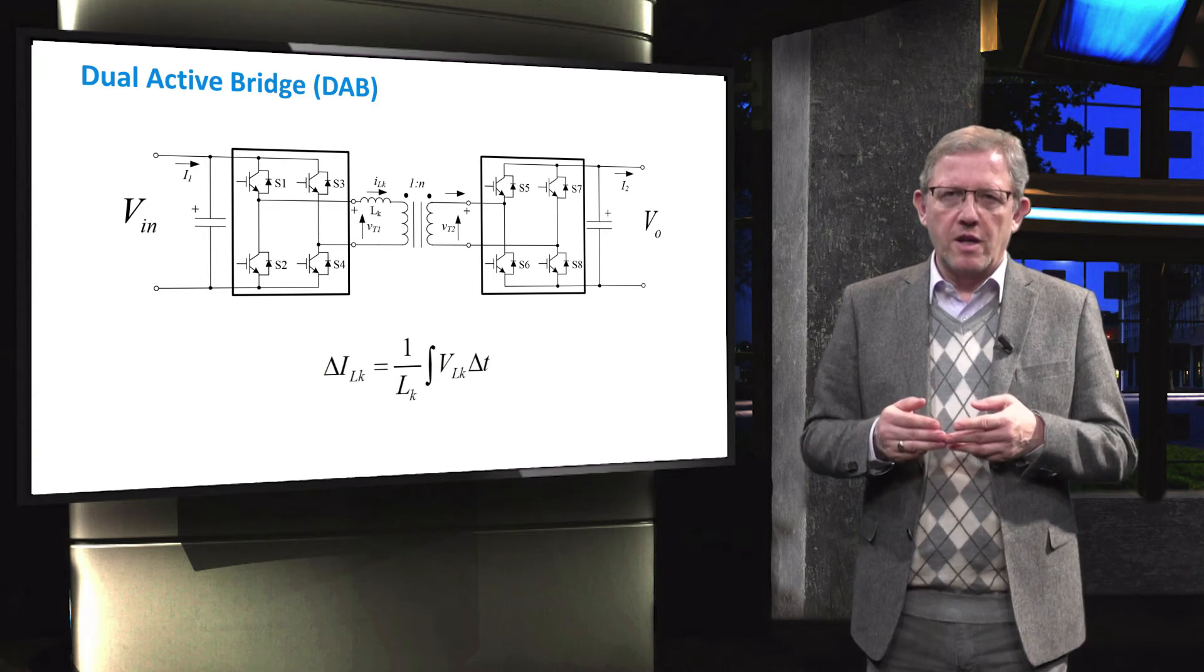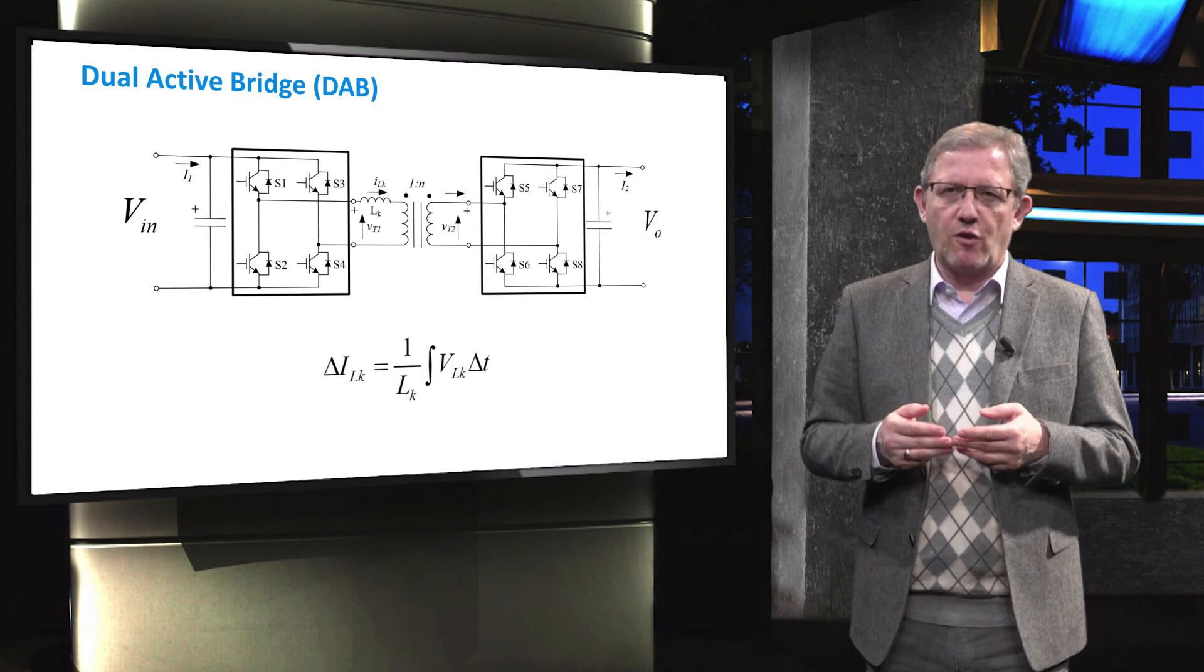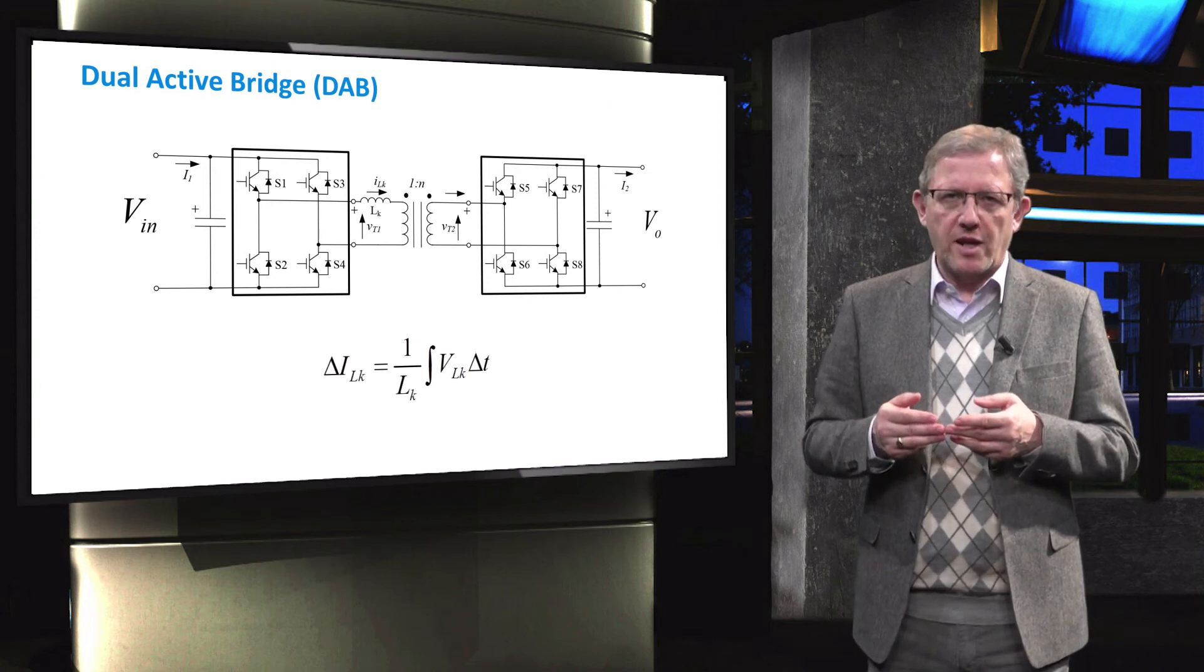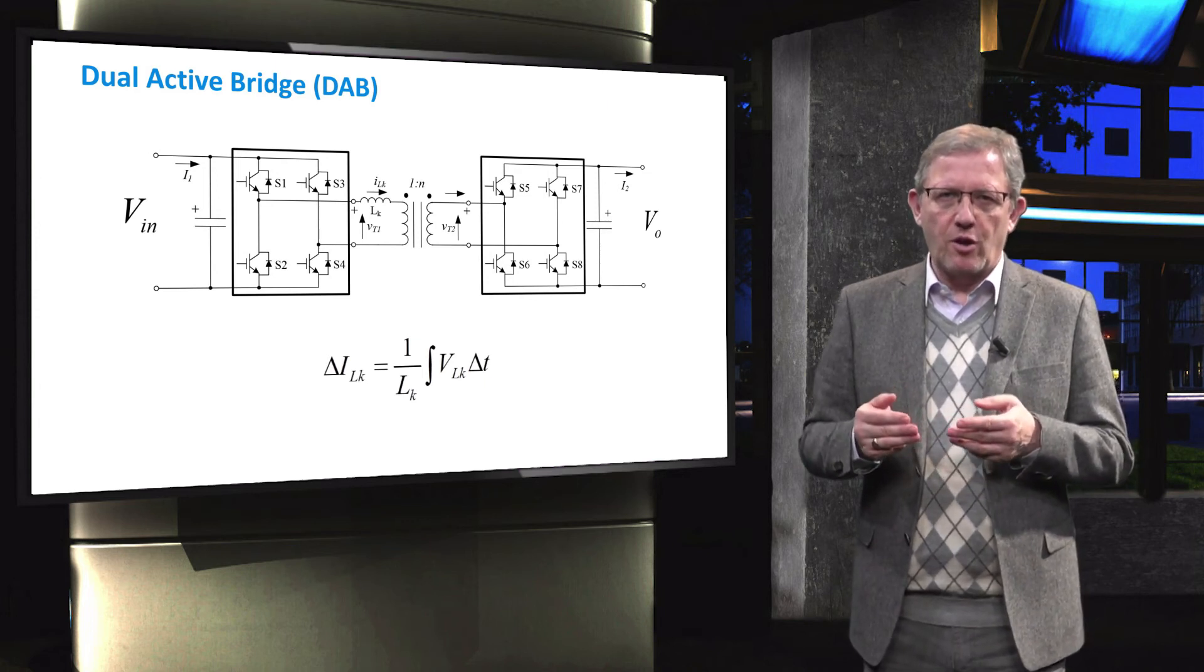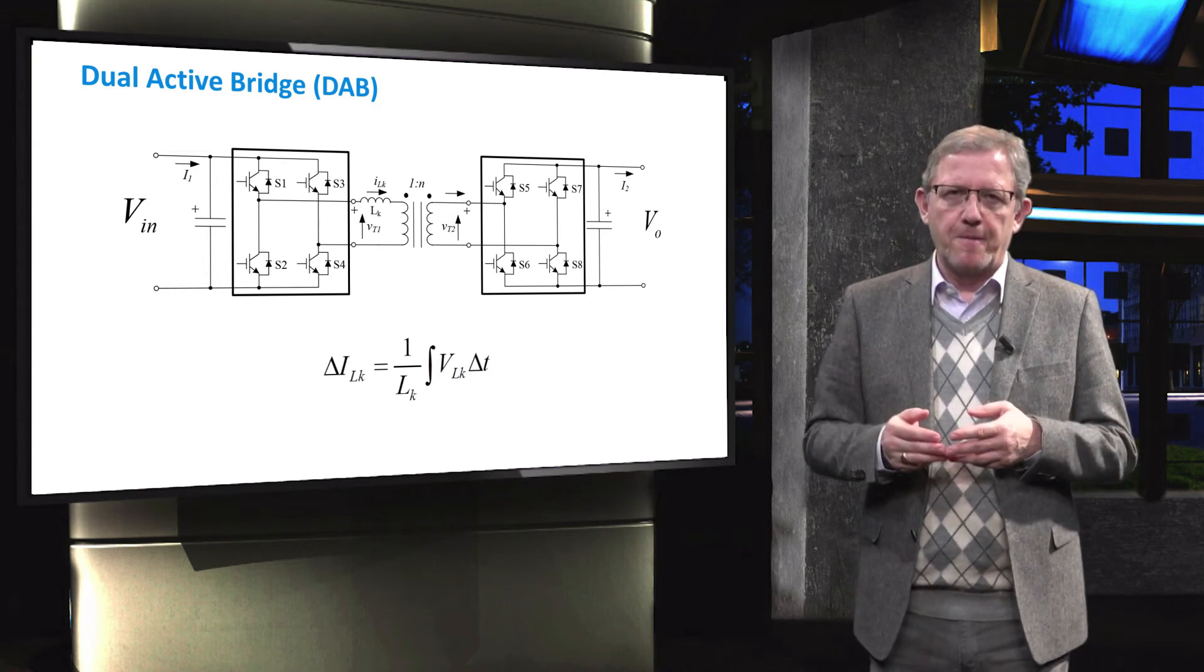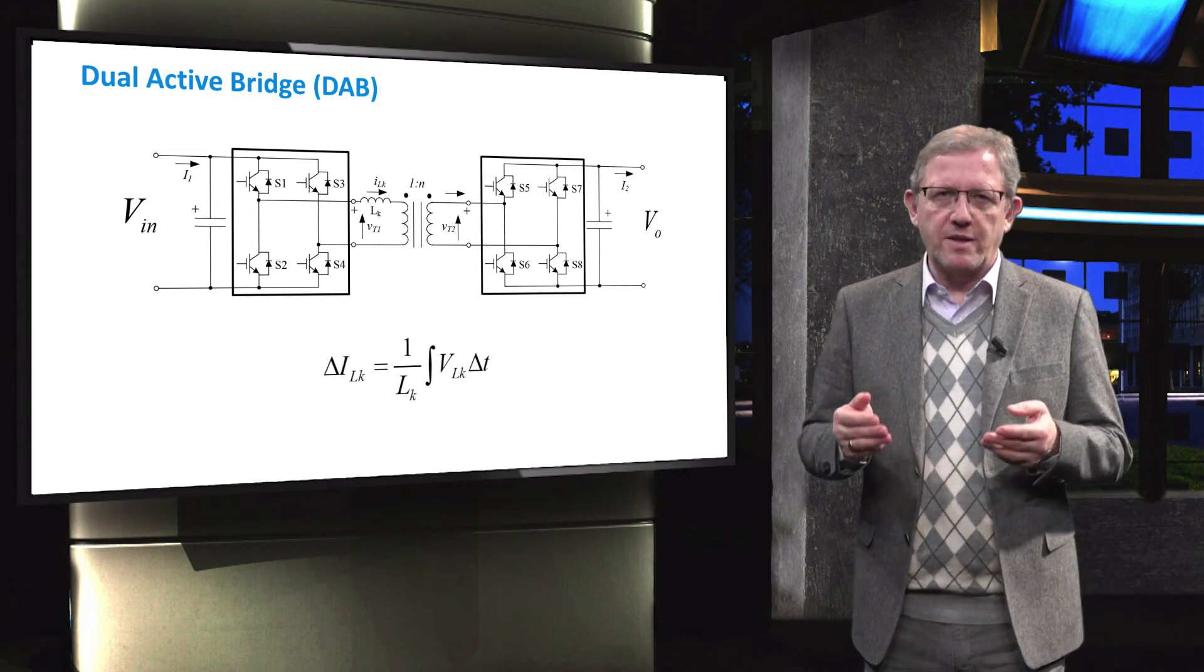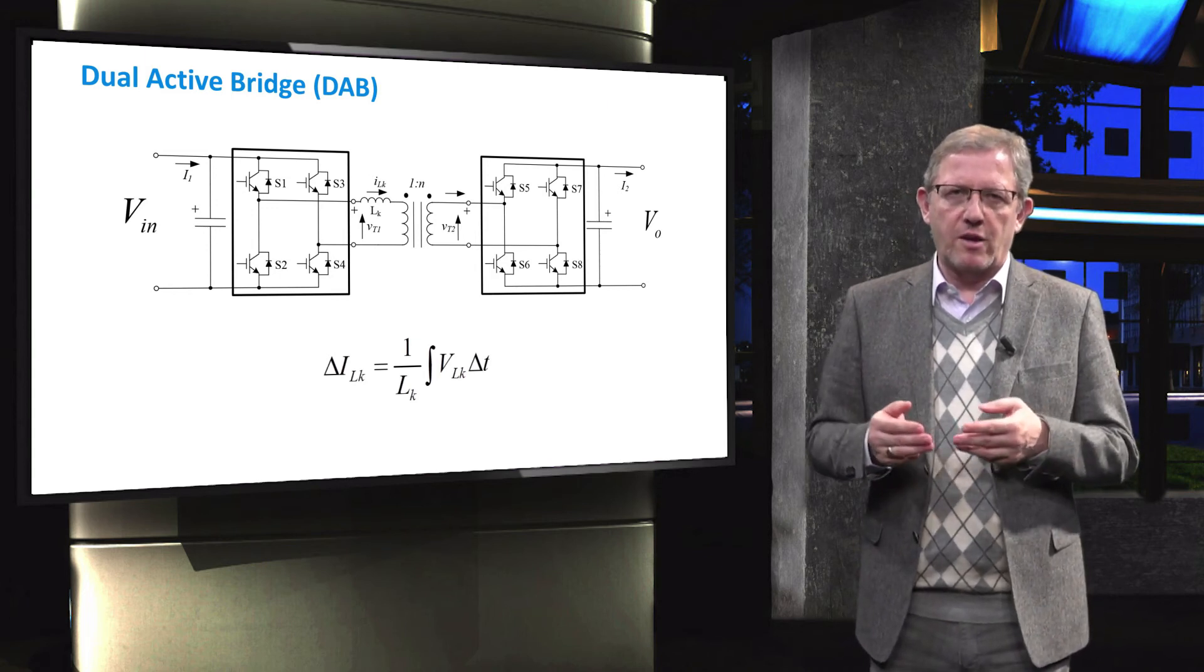The dual active bridge converter is popular because of the presence of the isolation, high frequency transformer, bidirectionality and also having a very simple control and very high efficiency, reaching up to 99%. Due to this, they are seen as potentially one of the fundamental building blocks for future microgrids.